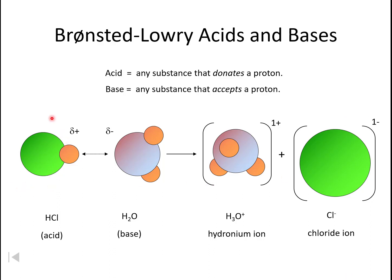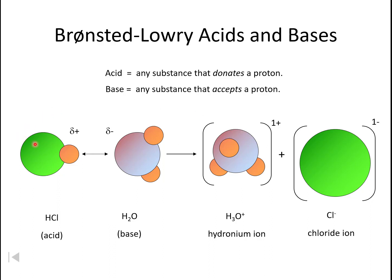We can see that in our example. First we have hydrochloric acid, and here we have water. The hydrochloric acid has one hydrogen, and the water has two. When we look at our products, the water is now a hydronium ion, which means it started with two hydrogens and now has a third. That hydrogen came from our hydrochloric acid. So our acid donated this hydrogen, which was then accepted by our water to become hydronium.